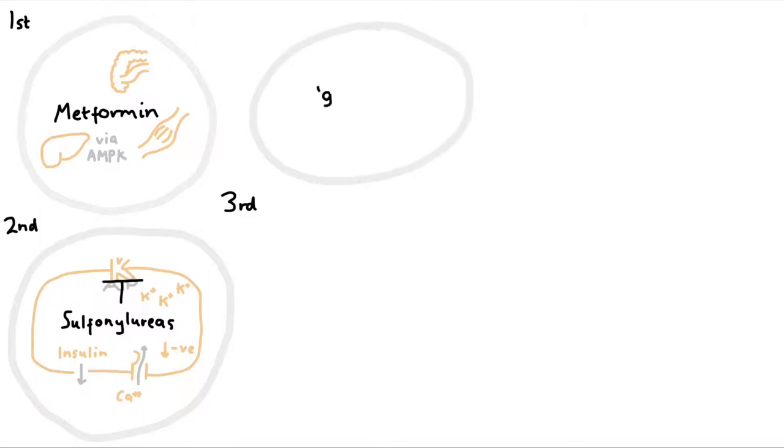We'll start with the gliptins. To understand how these work, we need to know about glucagon-like peptide, or GLP-1. When certain food hits the GIT, GLP-1 gets released from cells in the gut wall, then heads to the pancreas to stimulate the release of insulin. Which sounds great.